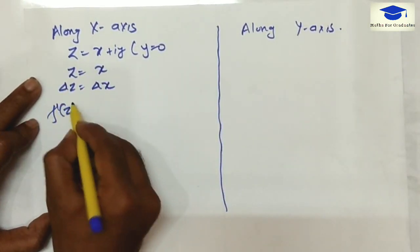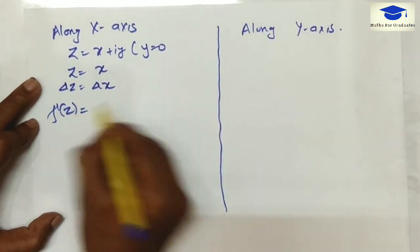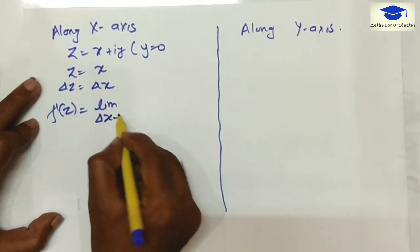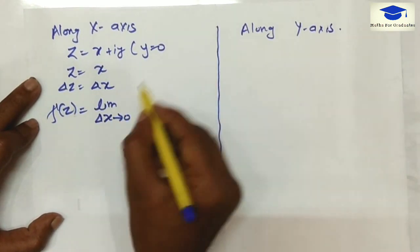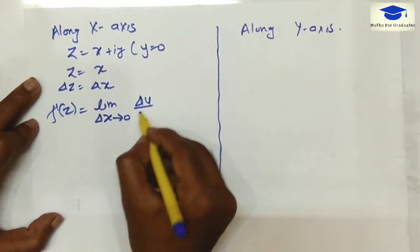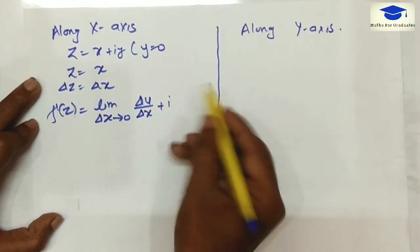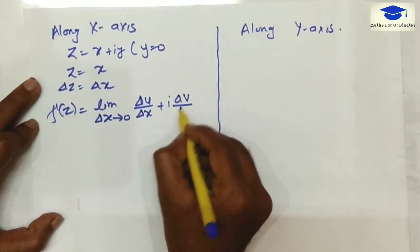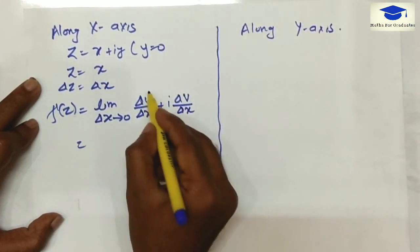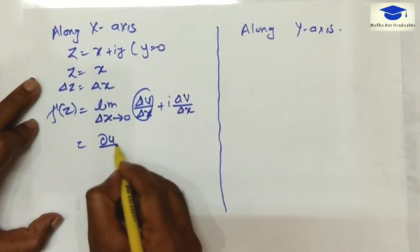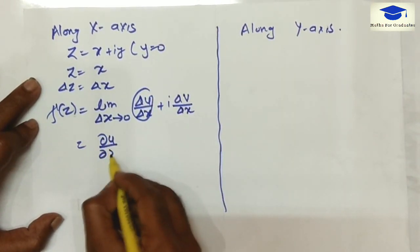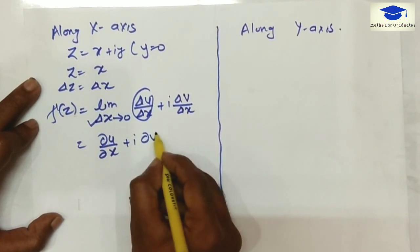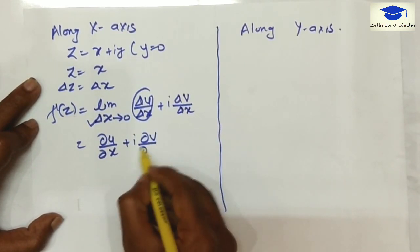So f'(z) becomes the limit as Δx tends towards 0 of Δu over Δx plus i times Δv over Δx. This is nothing but ∂u/∂x as Δx tends towards 0, and similarly this is ∂v/∂x.